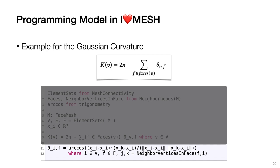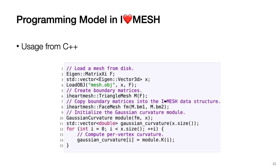Line 11 defines the incident angle, which wasn't specified in the equation. The theta function takes its parameters as subscripts, and its parameters are defined as members of V and F. The compiler also verifies that theta's parameters belong to these specific element sets of M. The theta function makes use of another neighborhood function, neighbor vertices in face, which returns the next two vertices in F in counterclockwise order. The following C++ code uses the module generated by Ahad Mesh to compute the curvature for each vertex.